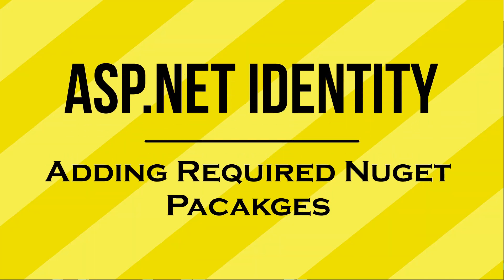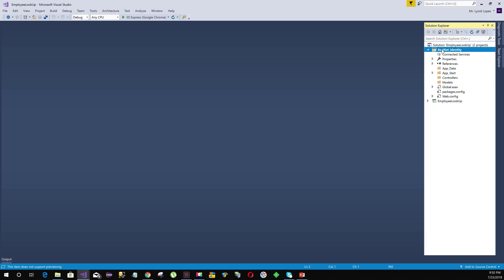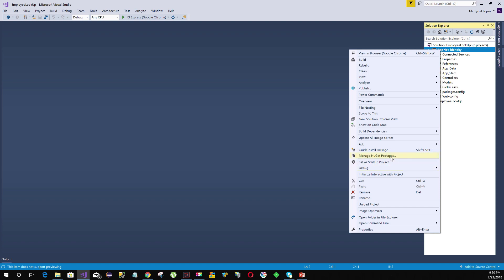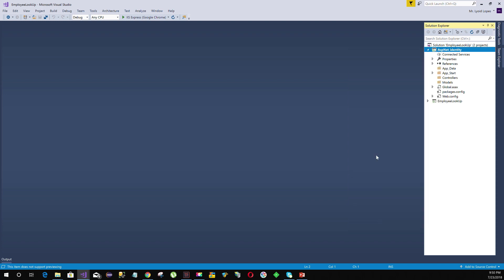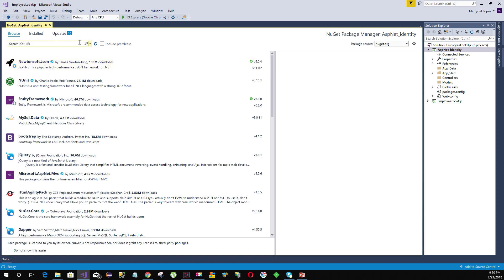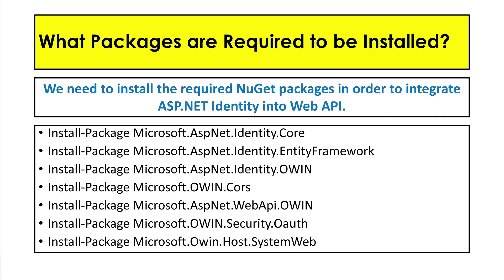In order to implement ASP.NET identity within our web API application, we need to add some packages. The first thing we would do is add all required packages for our application. To add packages, right click on our project and select Manage NuGet Packages. We will be installing the following packages — go ahead, pause the video and install them.